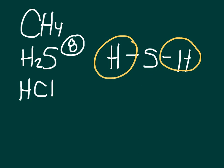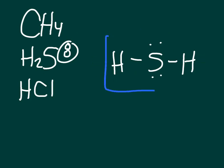Because the outer atoms are hydrogens, I cannot add any more electrons to them. That means I move on to step five: add electrons to the central atom. I can add four more electrons to the central atom — sulfur. Now I have eight valence electrons around sulfur. That means I have duets for my hydrogens, an octet for my sulfur. I'm done. This is the correct Lewis dot structure for H2S.